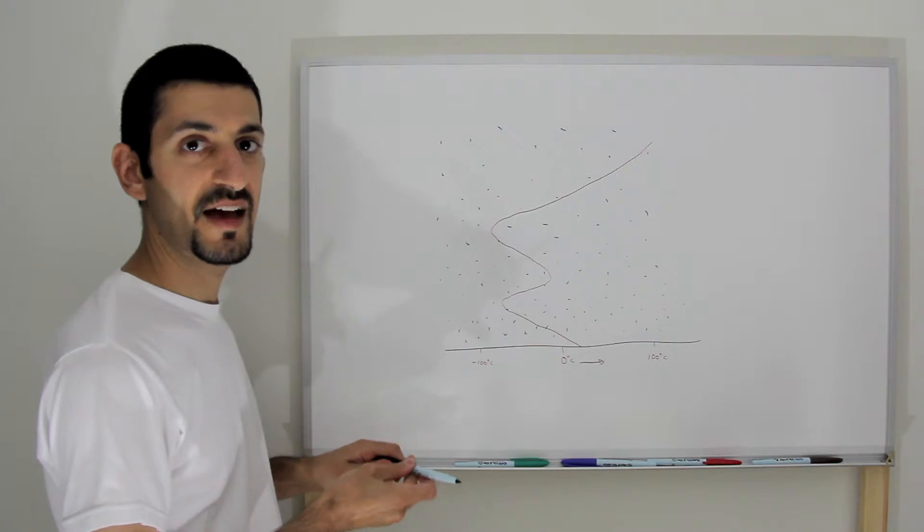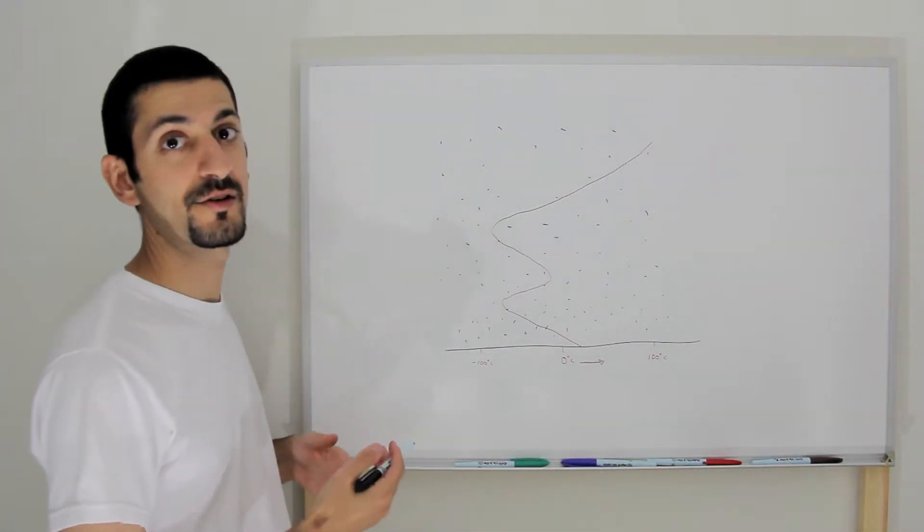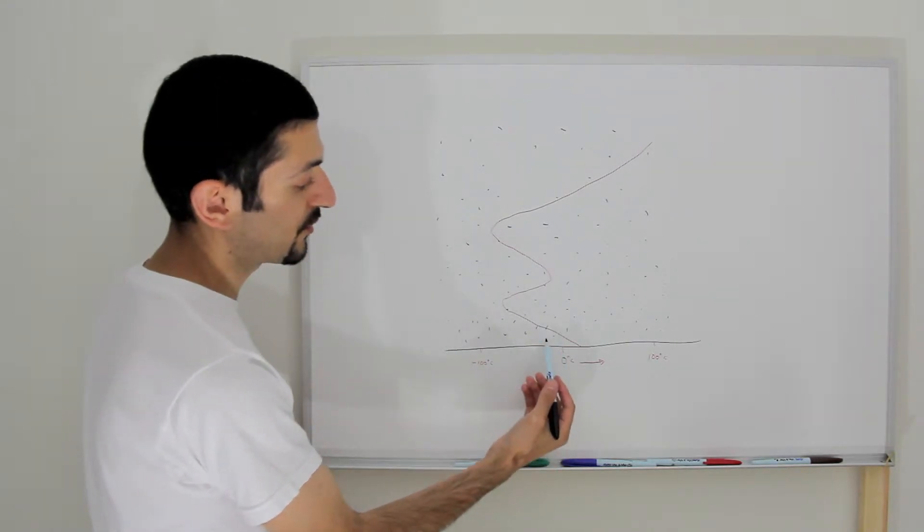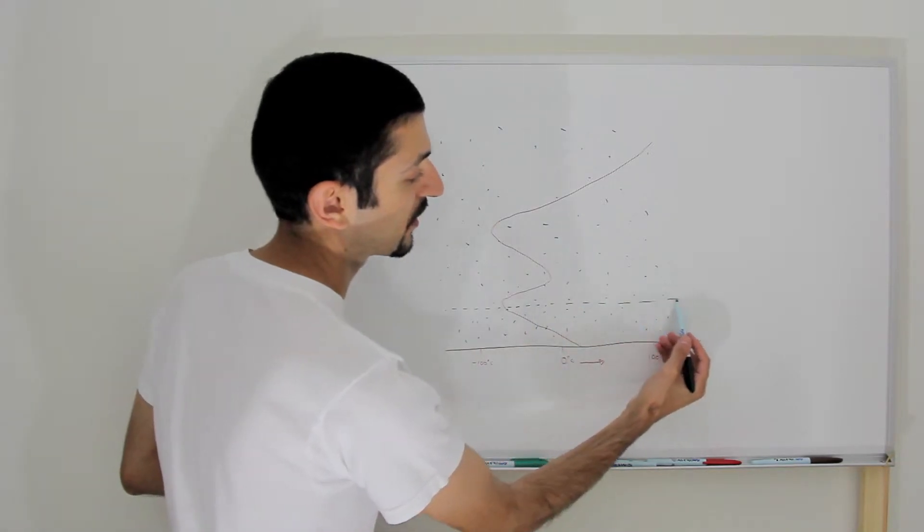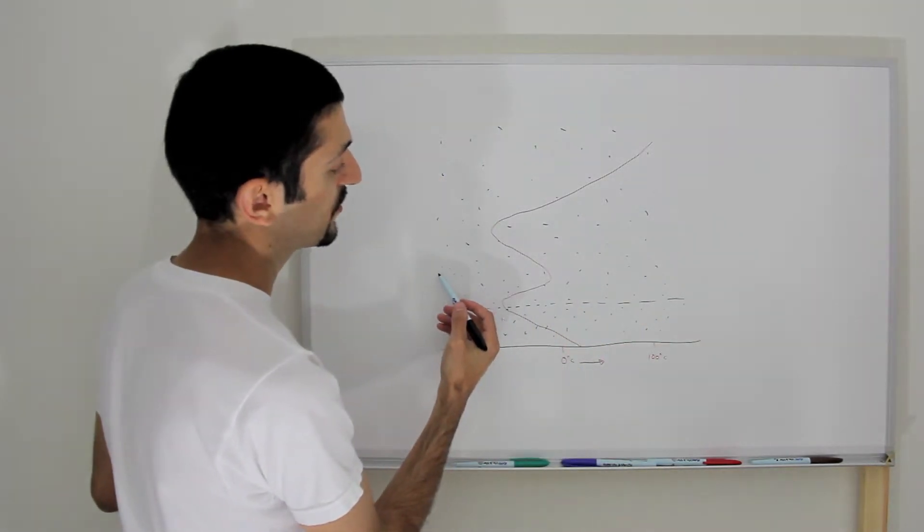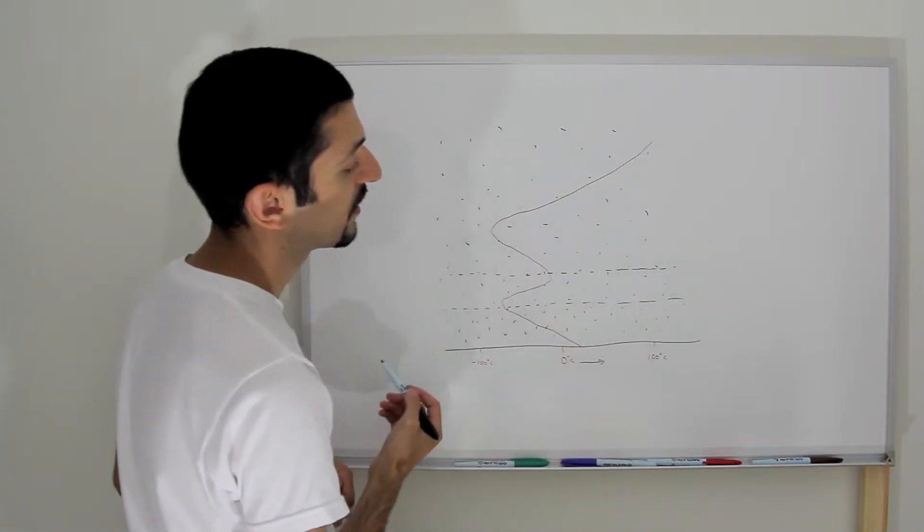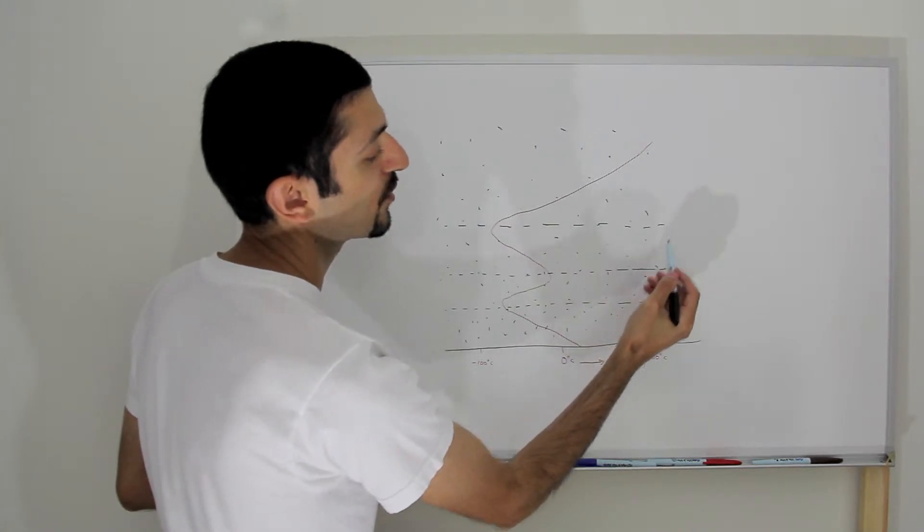Now, every time we have a temperature change, we have a new layer forming or new layer arising as we go up in the sky. So it gets colder, colder, colder, then it gets to a point where the temperature reverses. Then it gets warmer again to about minus 15 to zero degrees and the temperature starts to reverse again and get colder again. Then it starts to get warmer again.